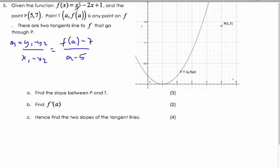Here is y1 and here is y2. So it's f(a) minus 7 over a minus 5. Well, f(a), if I plug it into my function, is going to be a² - 2a + 1 - 7 over a - 5, which is going to be a² - 2a - 6 over a - 5. That's the slope between P and T.